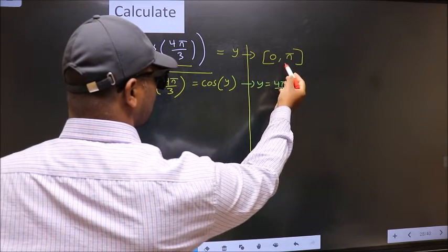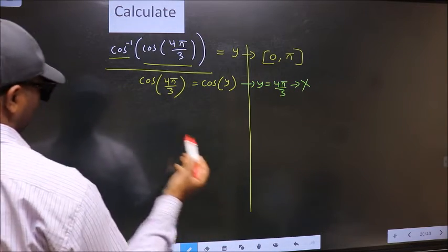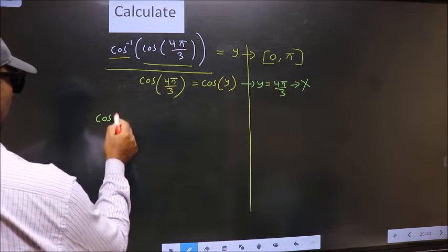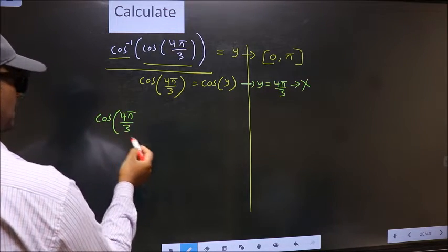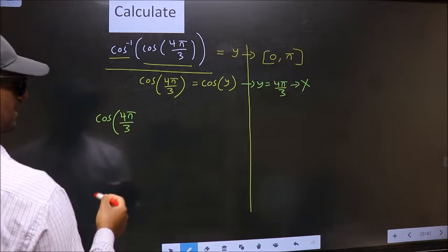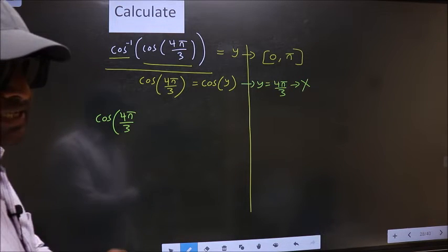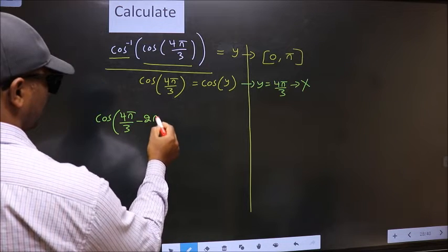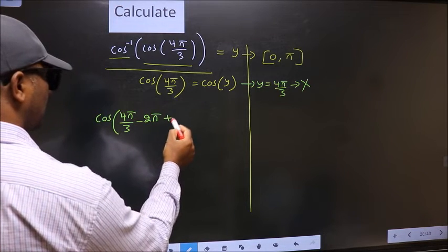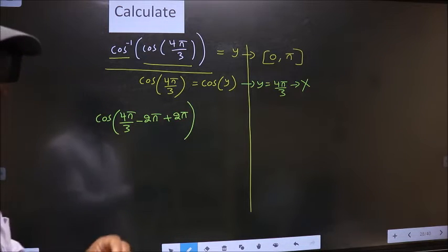Does this lie in this interval? No. So reject this answer. Cos 4 pi by 3 exceeds that interval. So we should decrease it. And to decrease I subtract 2 pi. Now whatever we are subtracting we should also add the same thing. Important point here.